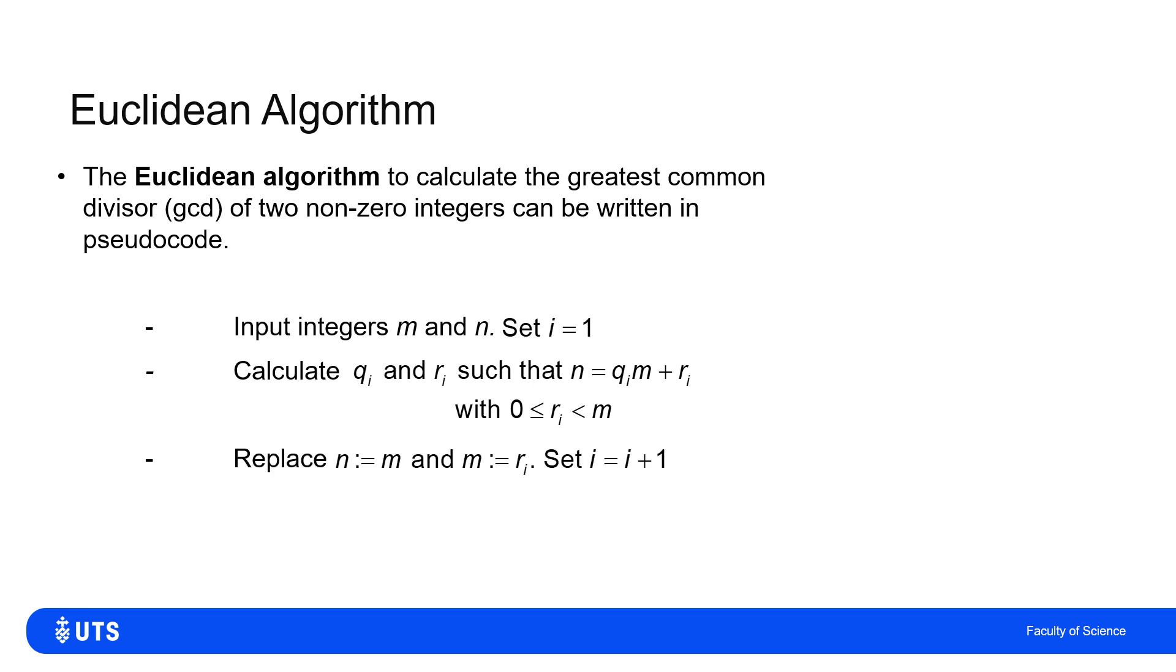And I keep repeating this, replacing the old M as the new N and the old remainder Ri as the new M. And then I'll update i to i+1. And I do this repeatedly until eventually there is no remainder left, until eventually Ri is 0 for some j. I don't know what it is.